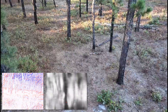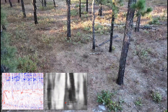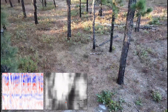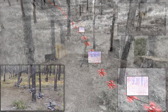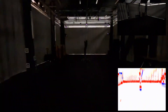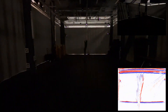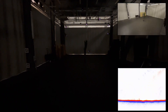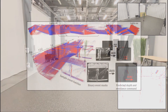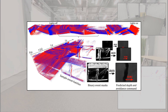The bottom left shows the event stream and predictions on board the drone. We can also utilize an event camera's high dynamic range to avoid obstacles in the dark. Here, we present the event volume from this trial with some extracted sample event batches and their corresponding binary event masks and predictions.